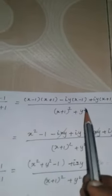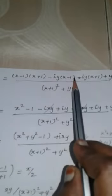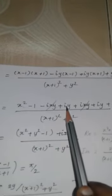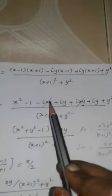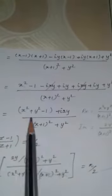Expanding further and cancelling: the terms ixy and −ixy cancel. The remaining real part is x² + y² − 1, and the imaginary part is 2y. The denominator, being (x+1)² + y² using the a² − b² form, remains unchanged.